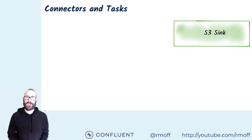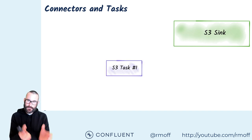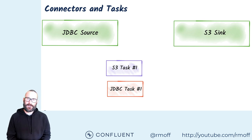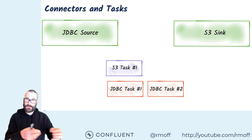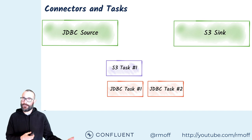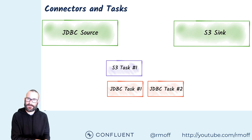When we run a connector in Kafka Connect, we have the idea of a logical connector — for example, a sink writing data from a Kafka topic to Amazon S3. That gets carried out internally by a task. Kafka Connect can also parallelize work within a given connector — for instance, the JDBC connector might say it's going to run two tasks because you asked to pull in data from two tables, pulling both in parallel. Whether to run in parallel or serial can be configured.